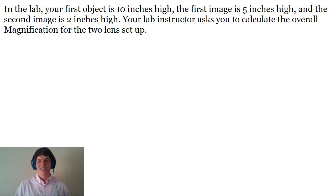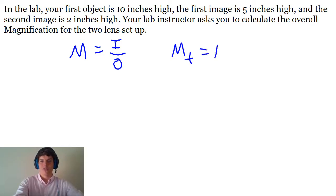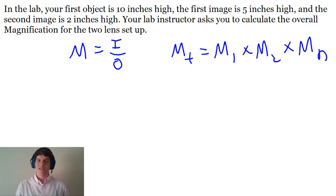In terms of this question, the two equations we need here are magnification equals image height divided by object height, as well as magnification total equals magnification one times magnification two times magnification n, right? So these are the two equations we need.